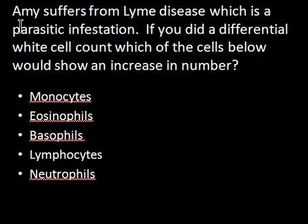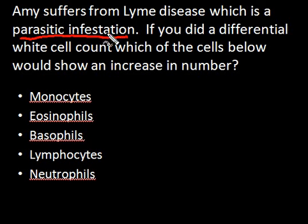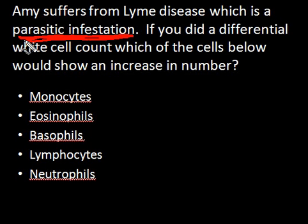This first question tells you that Amy is suffering from Lyme disease, which is a parasitic infestation. It doesn't matter what specific disease she has — what is important is that this is a parasitic infestation, and you have learned about certain cells which increase in this kind of situation. If you did a differential white cell count, which is counting white cells in a total count of 100 cells, it asks which of the cells listed will show an increase in number. Parasitic infestation is the key operative word.